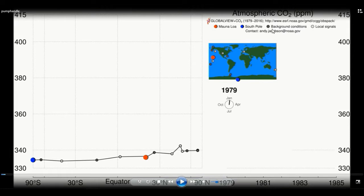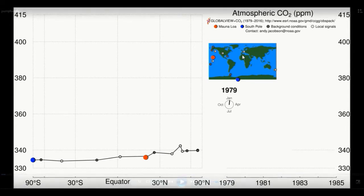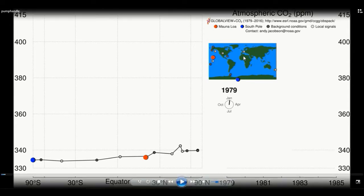The grey dots are background sites located far away from human populations. The lighter colored dots are local signals located close to large human populations where the CO2 emissions are coming from.